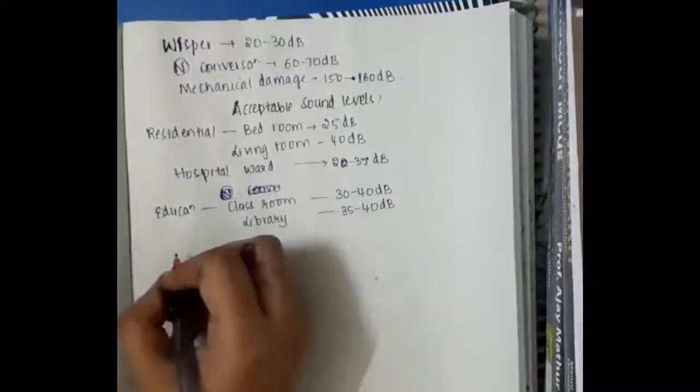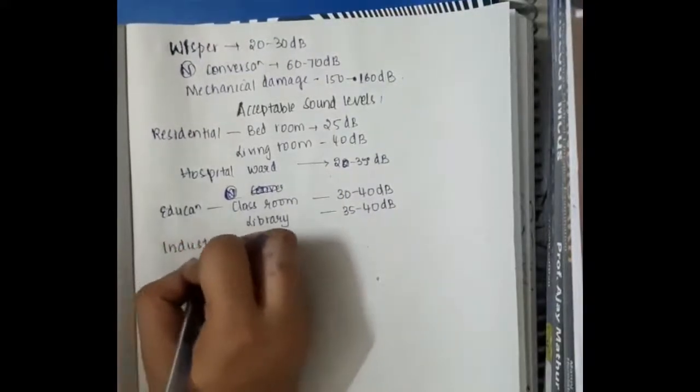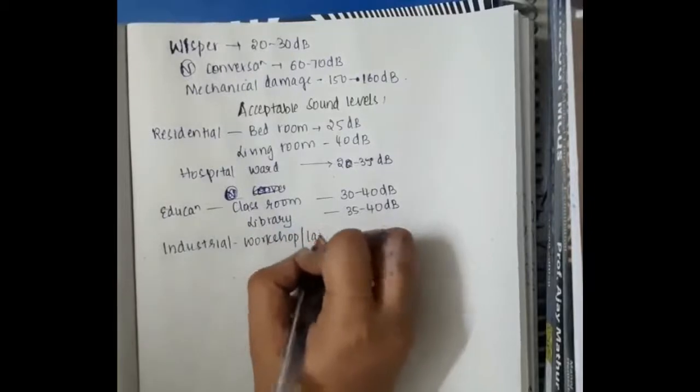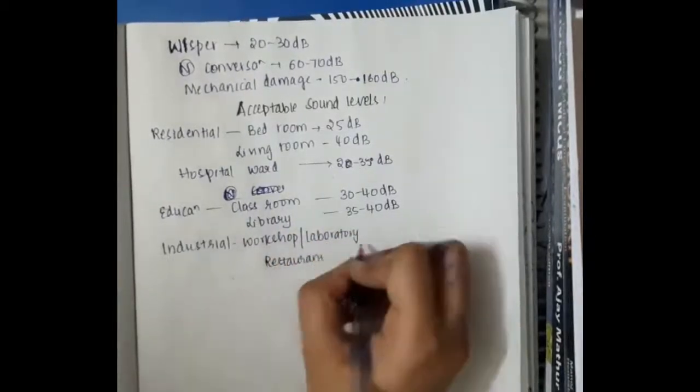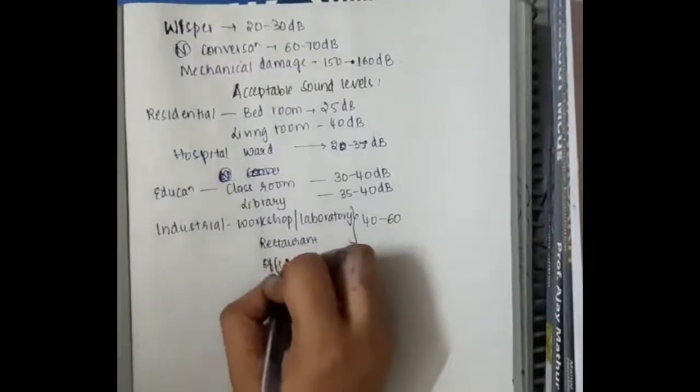In library, 35 to 40 dB is acceptable. In industrial, workshop or laboratory or restaurant, around 40 to 60 dB is acceptable.